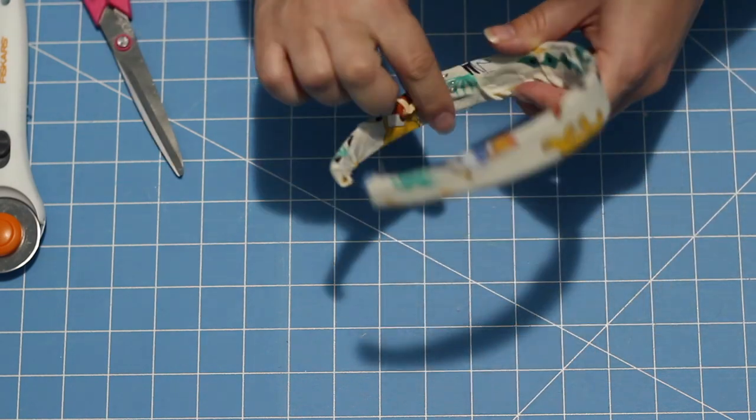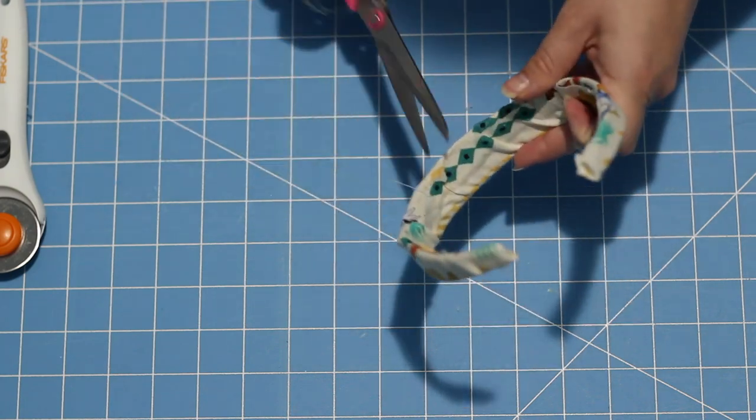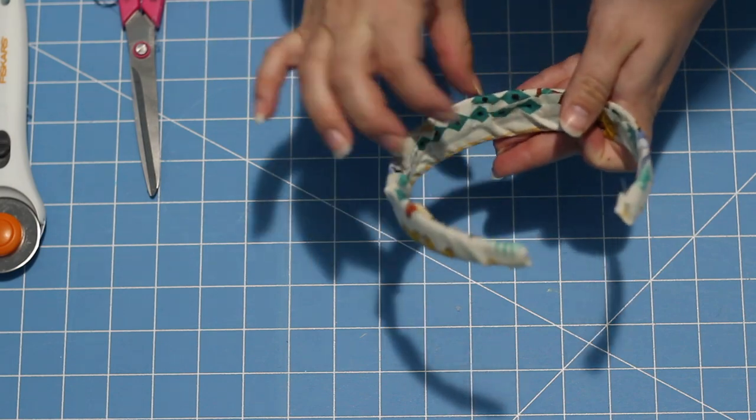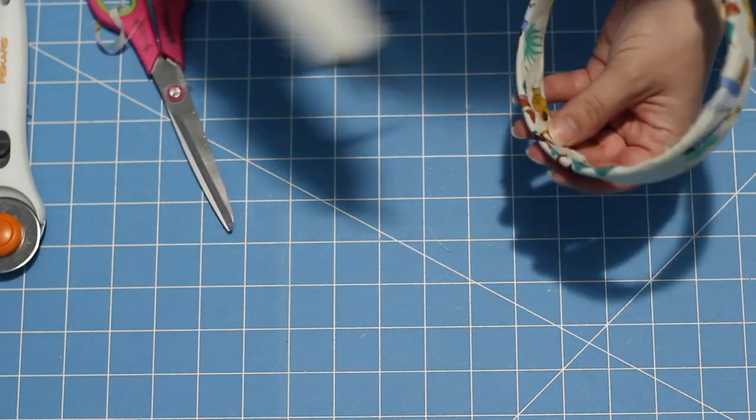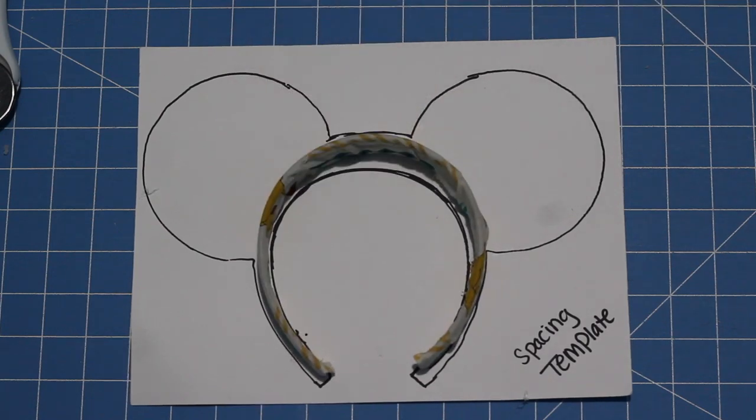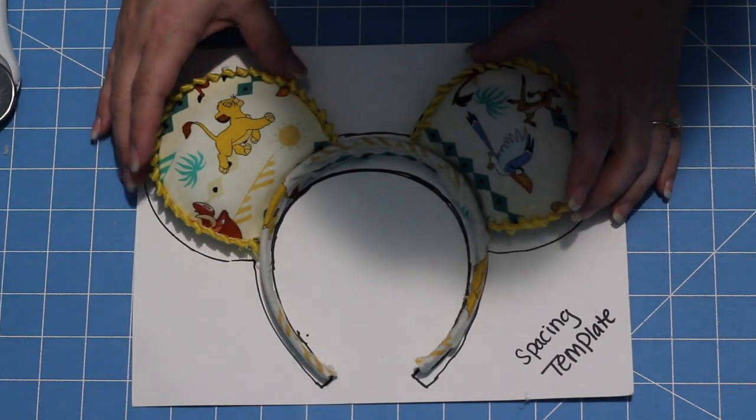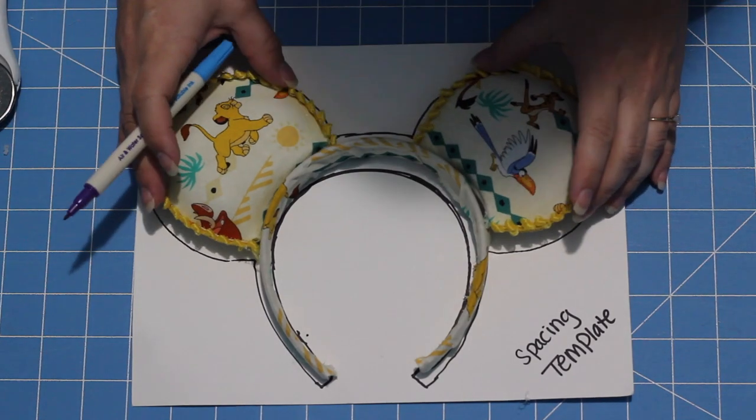Something I have done in the past to make the headband look even nicer is just lining the inside with some ribbon. I didn't have any ribbon that matched this particular fabric, so I really didn't want to just put a random color on the inside. But some people do really like the look of that, so just some advice if you wanted to try that out.